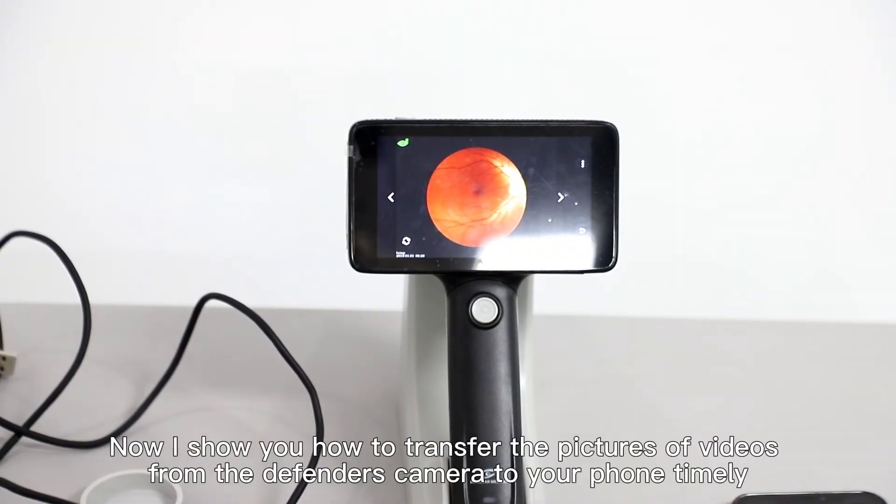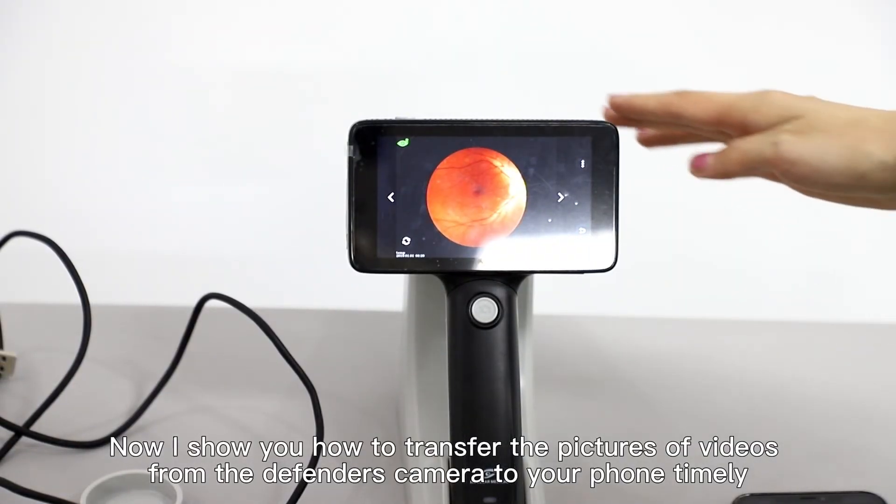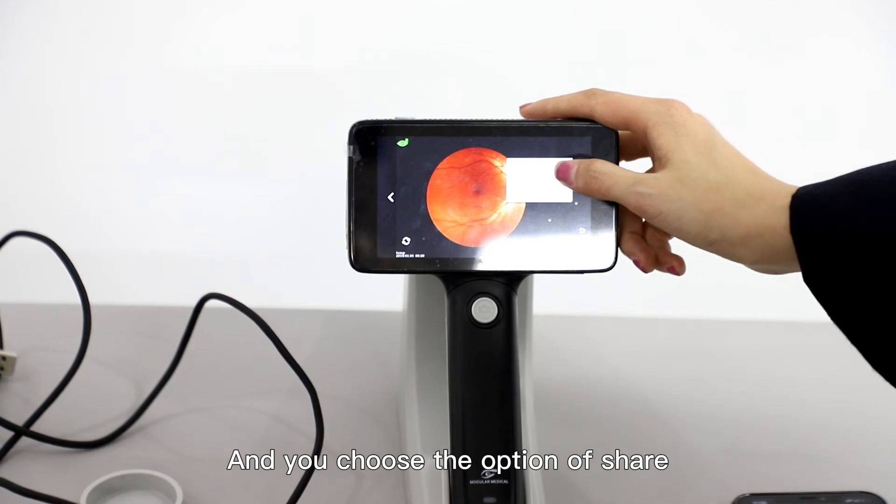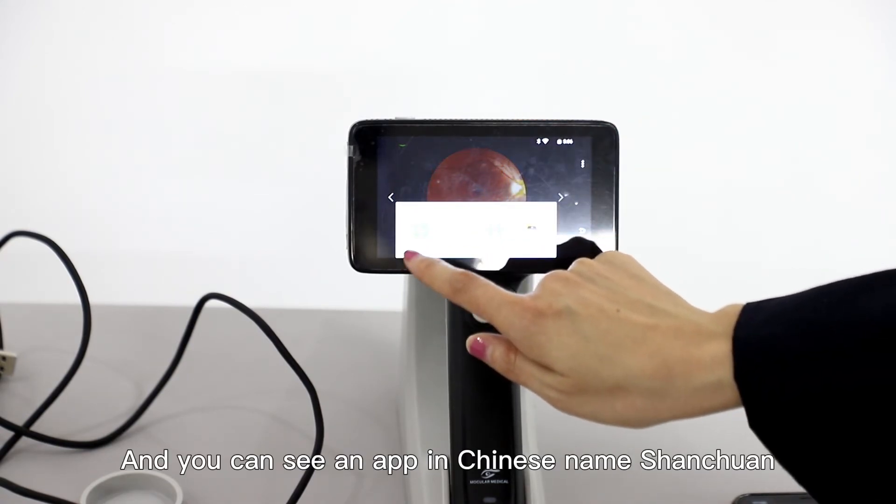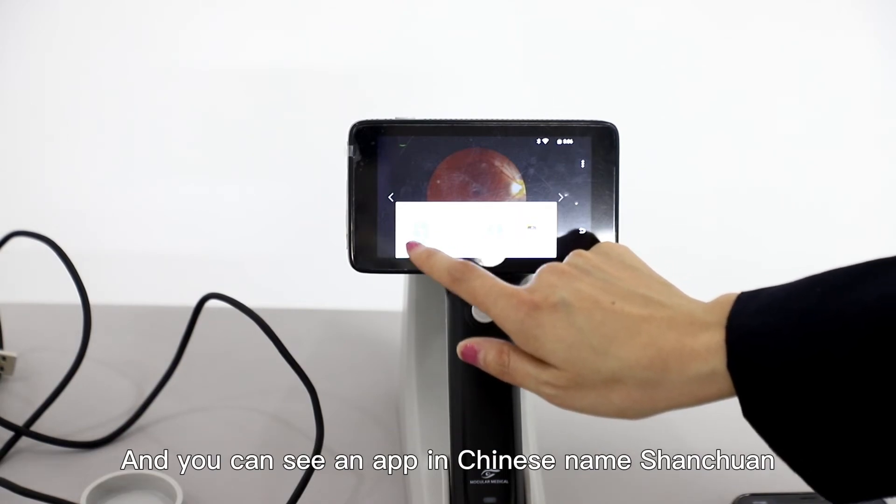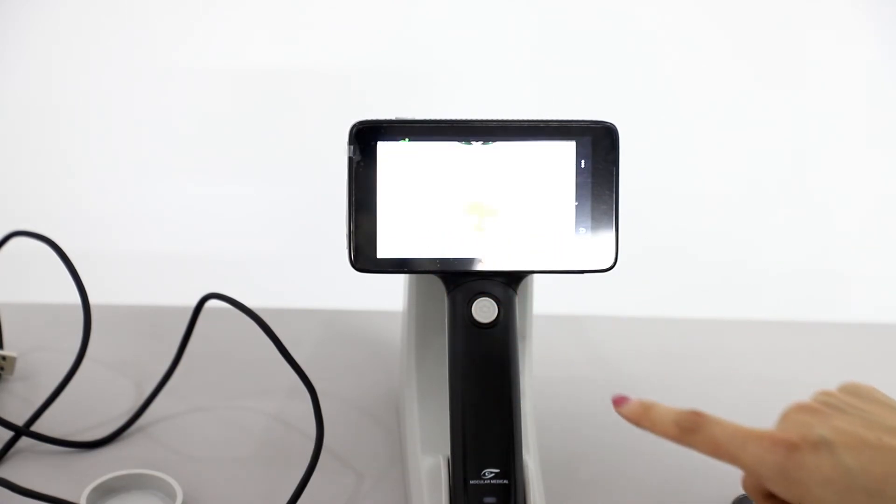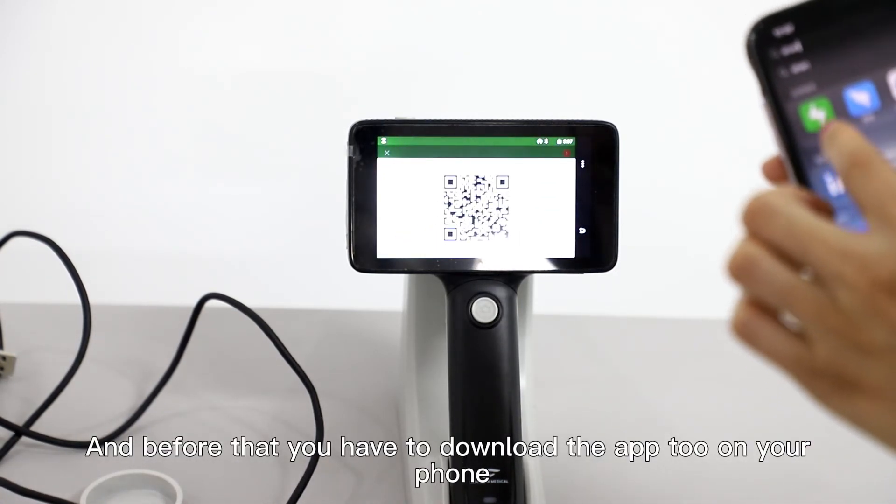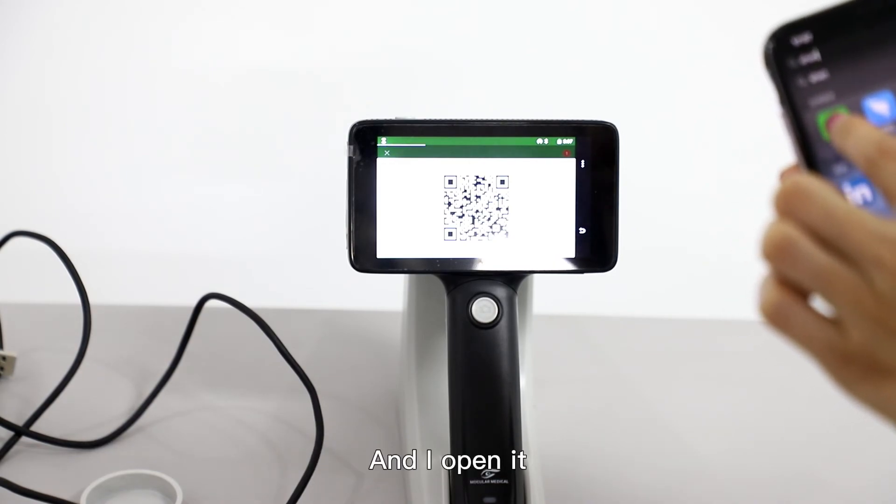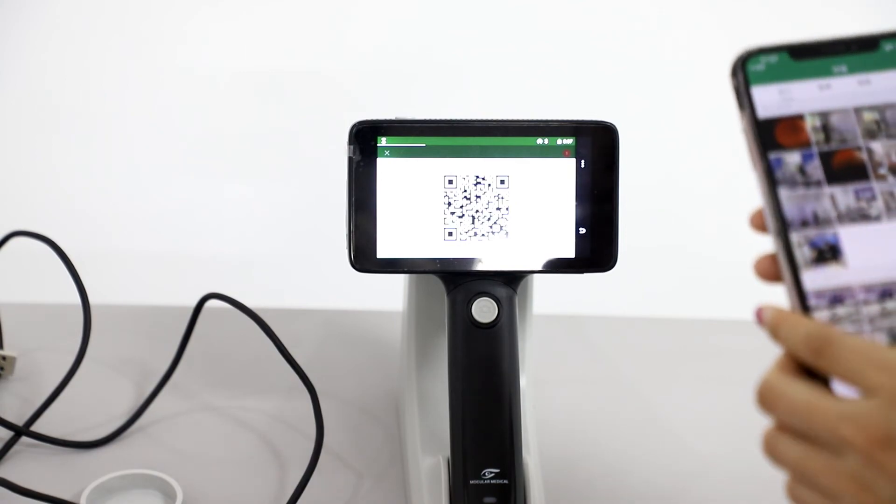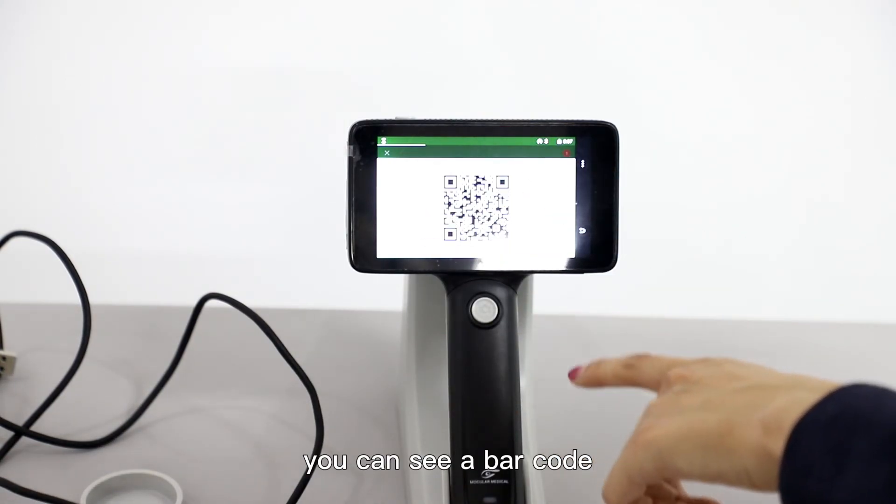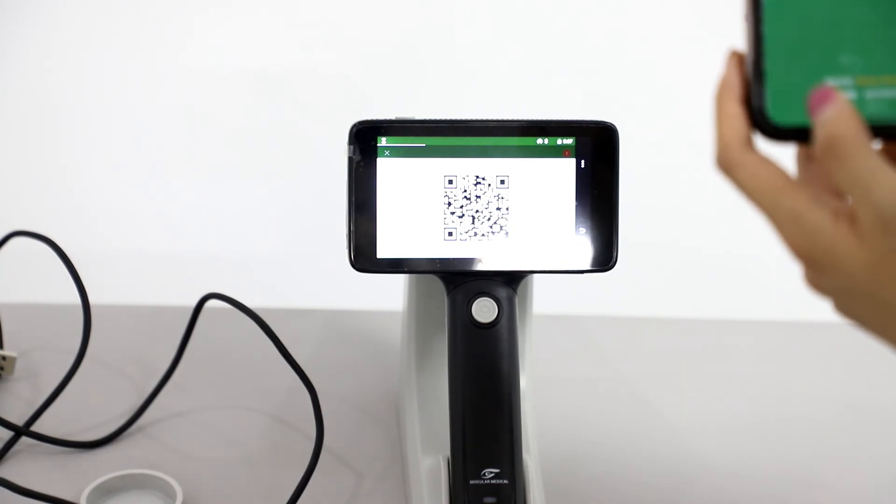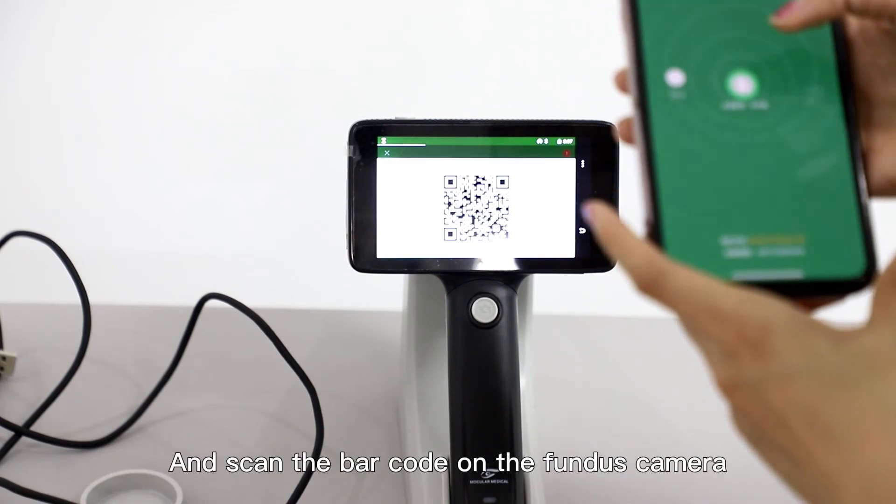Now I'll show you how to transfer pictures or videos from the Fender's camera to your phone. Choose a picture first, then choose the share option. You'll see an app with Chinese name ShanTran. Before that, you have to download the app on your phone too. Open it, and on the Fender's camera you'll see a barcode. Scan the barcode on the Fender's camera.